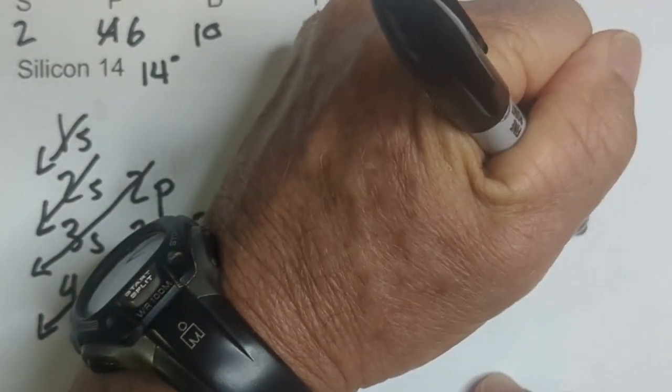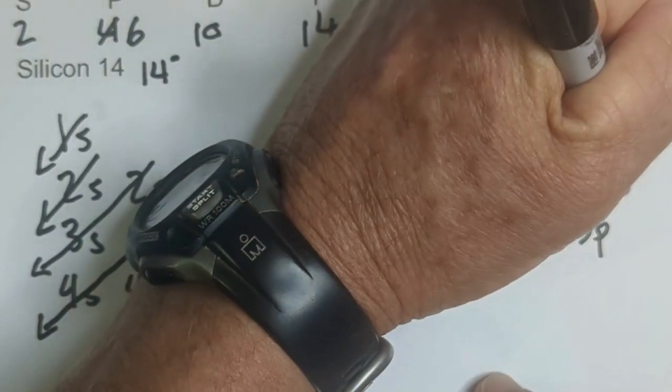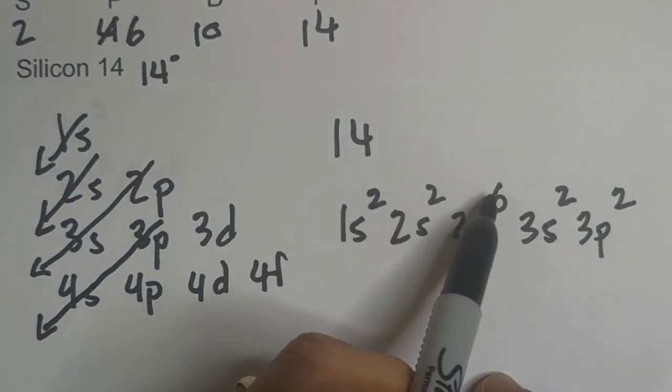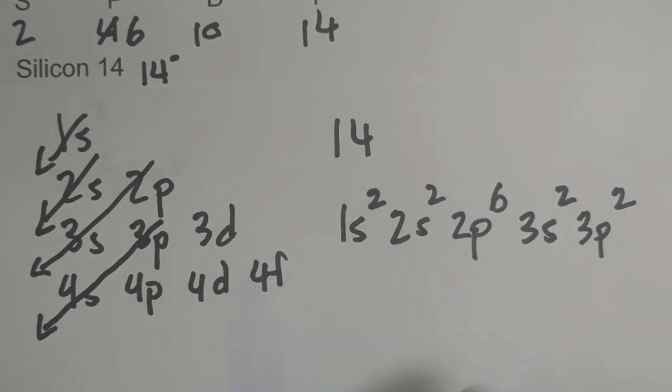And remember it can hold up to 6, but we only need 2. Let's check the math: we have 4, 10, 12, 14. So at ground state, here's the electron configuration.